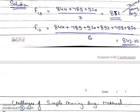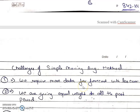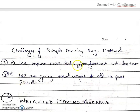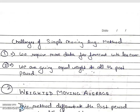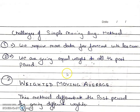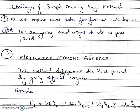There are two limitations of the simple moving average method. First, we require more data for a forecast with less error, so we store more data and it costs very high. Second, we are giving equal weight to all the past periods, which is practically not possible.